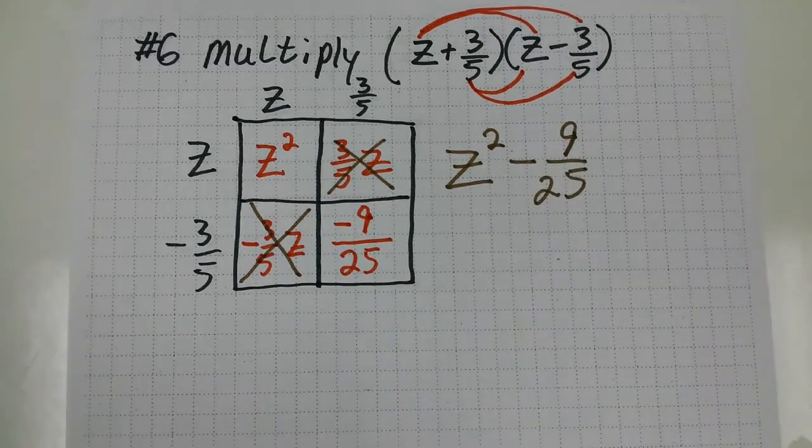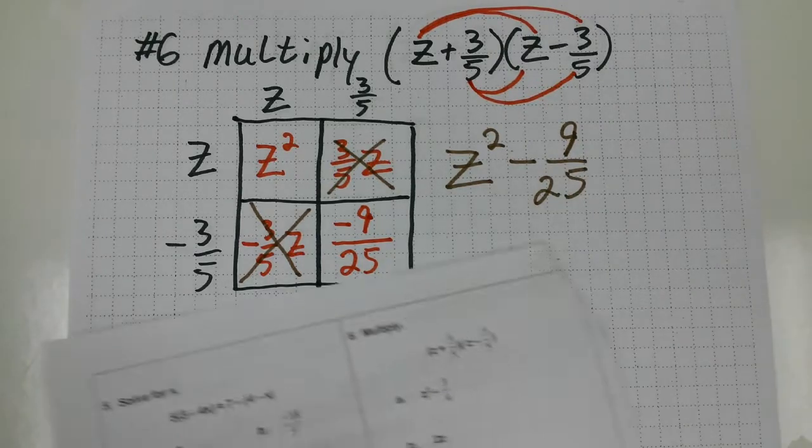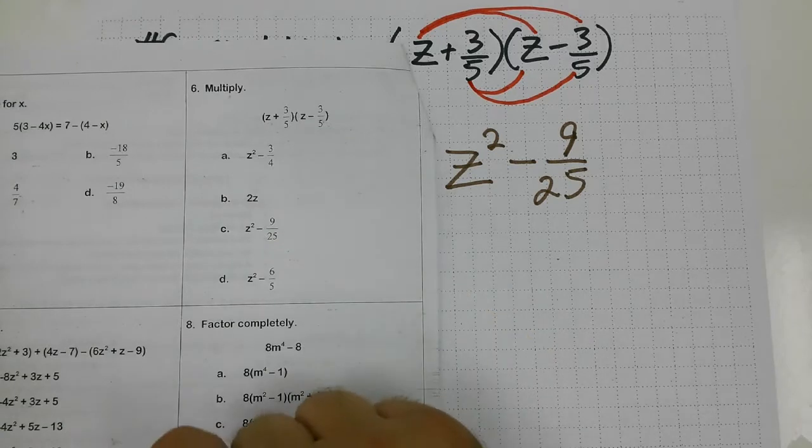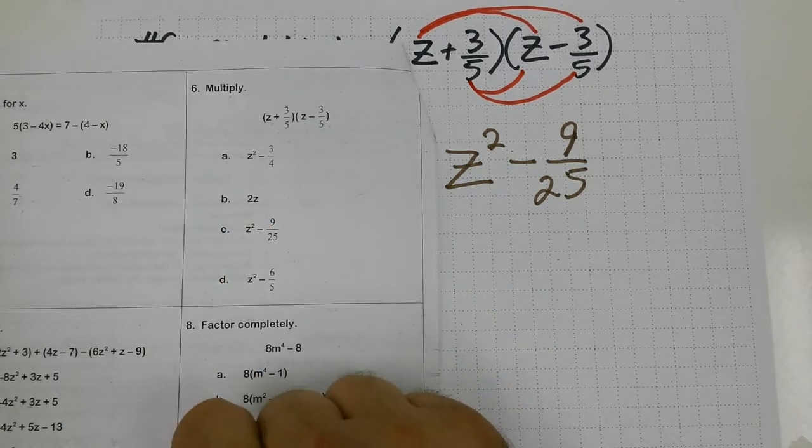Let's see if that lines up with any of our choices from the multiple choice section. So I have z minus 3 fourths. No. 2z. And there it is. Z squared minus 9 twentyfifths.